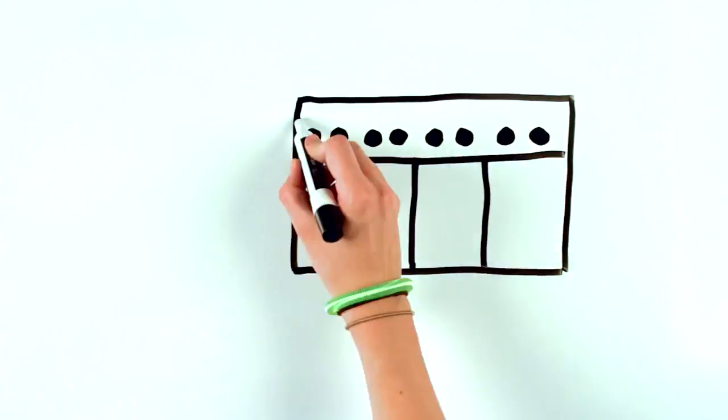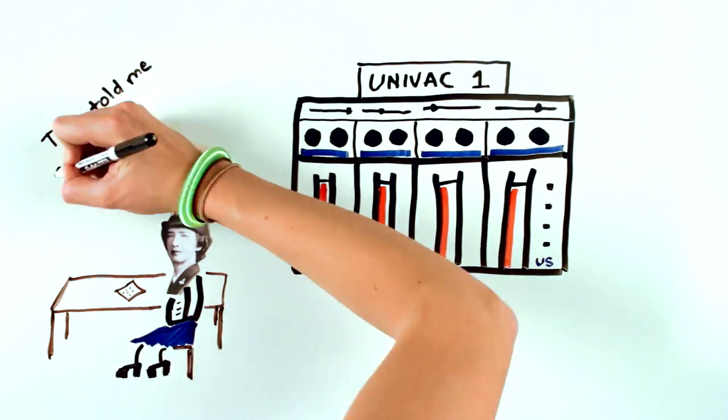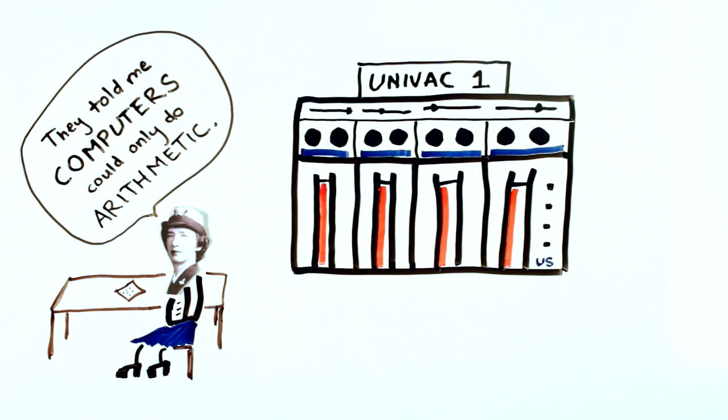Next, Grace joined the team developing the UNIVAC-1, the second commercial computer developed in the U.S. Grace created a compiler to translate source code into computer language.